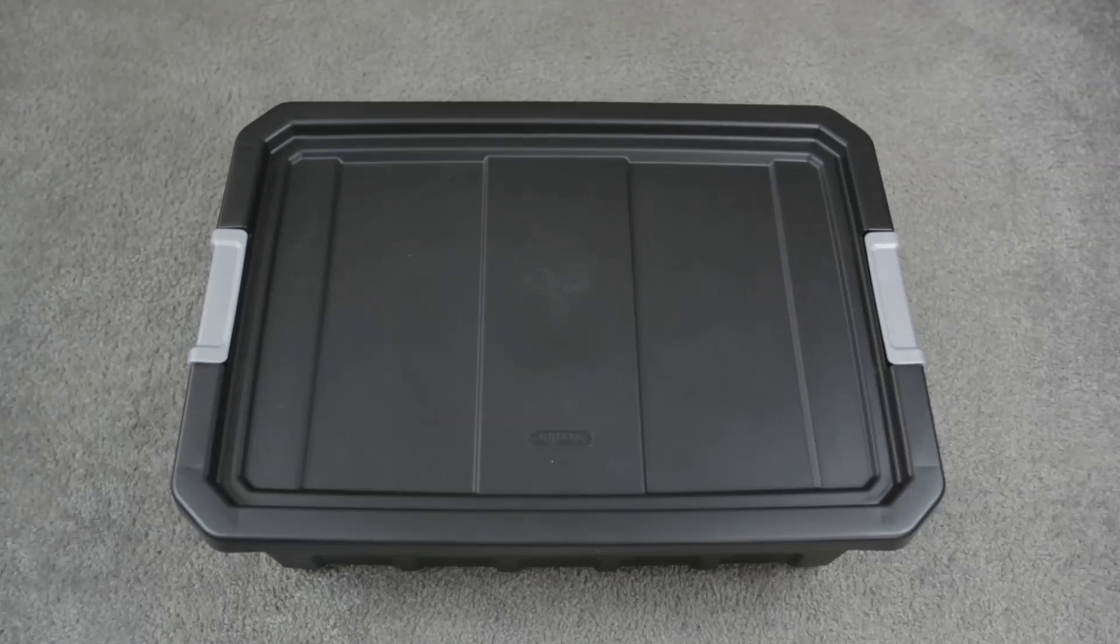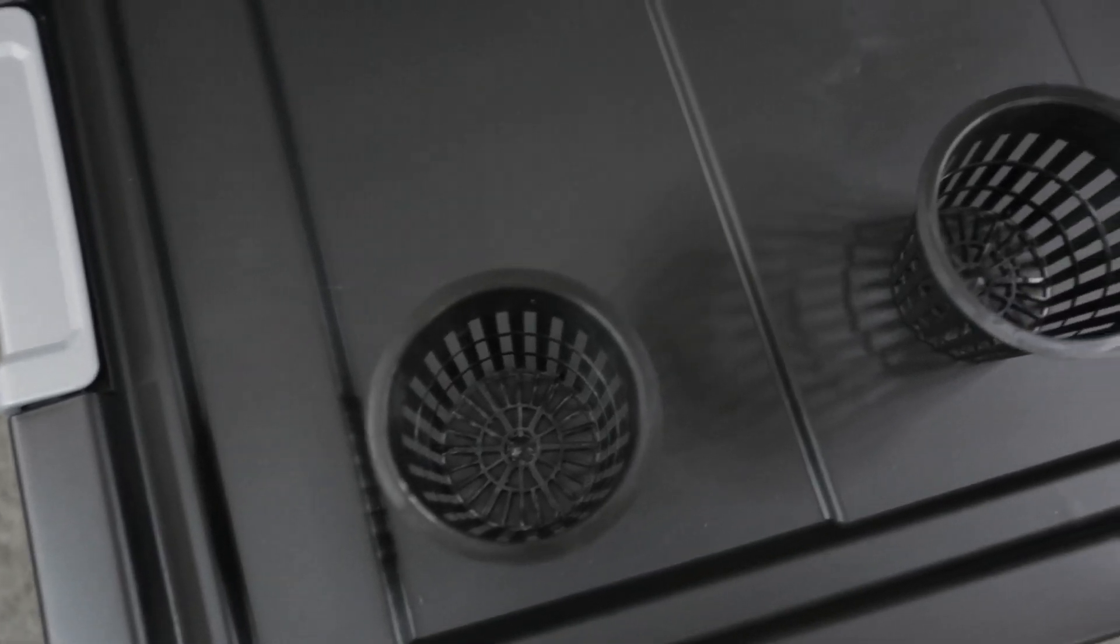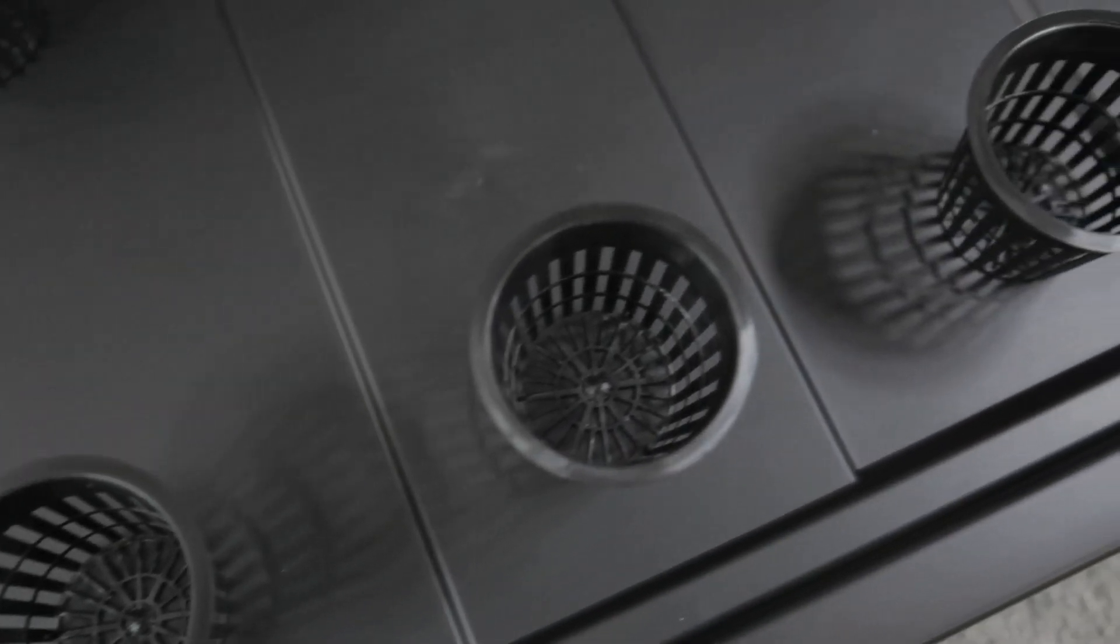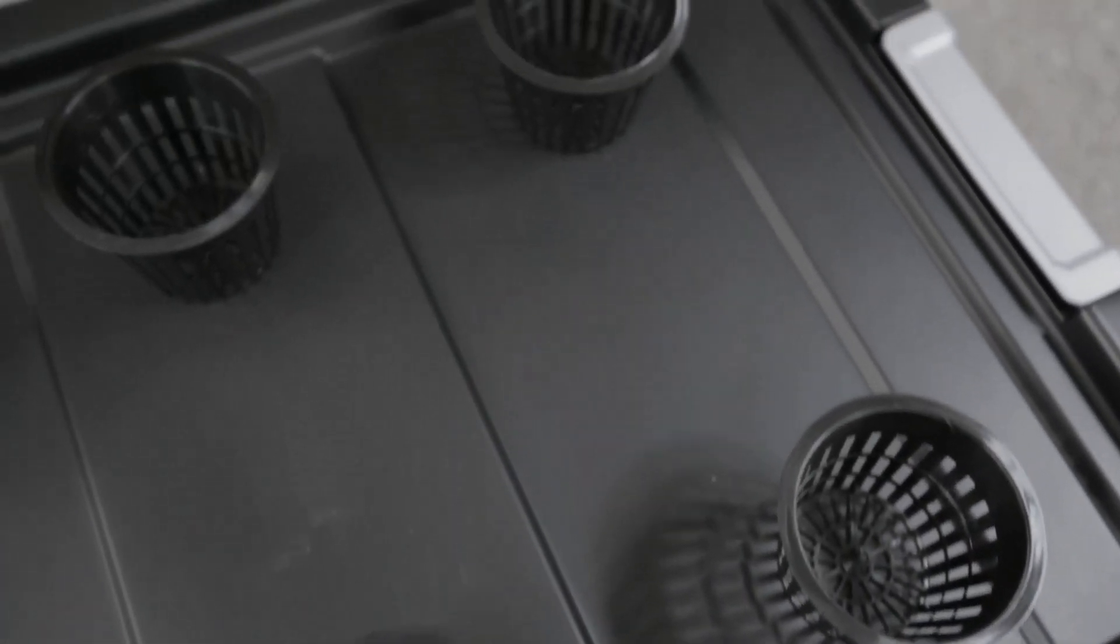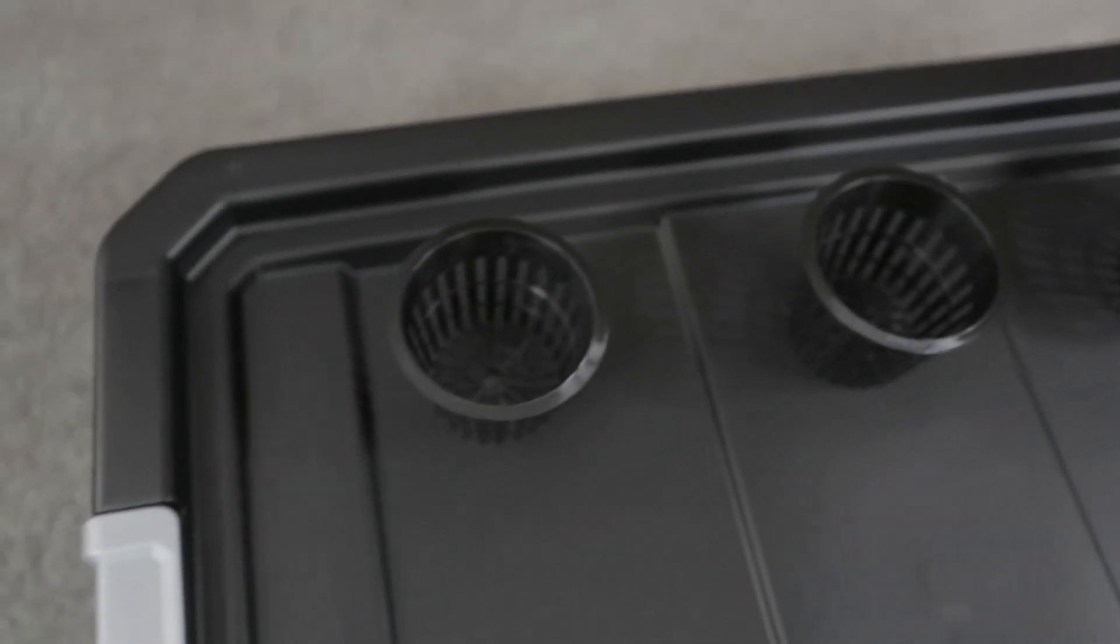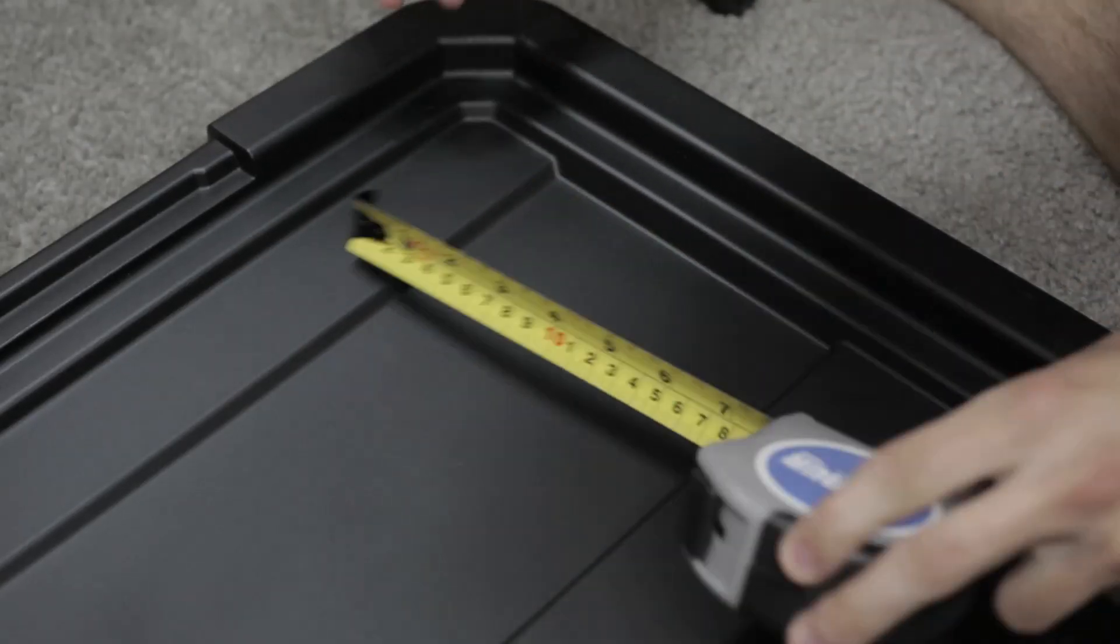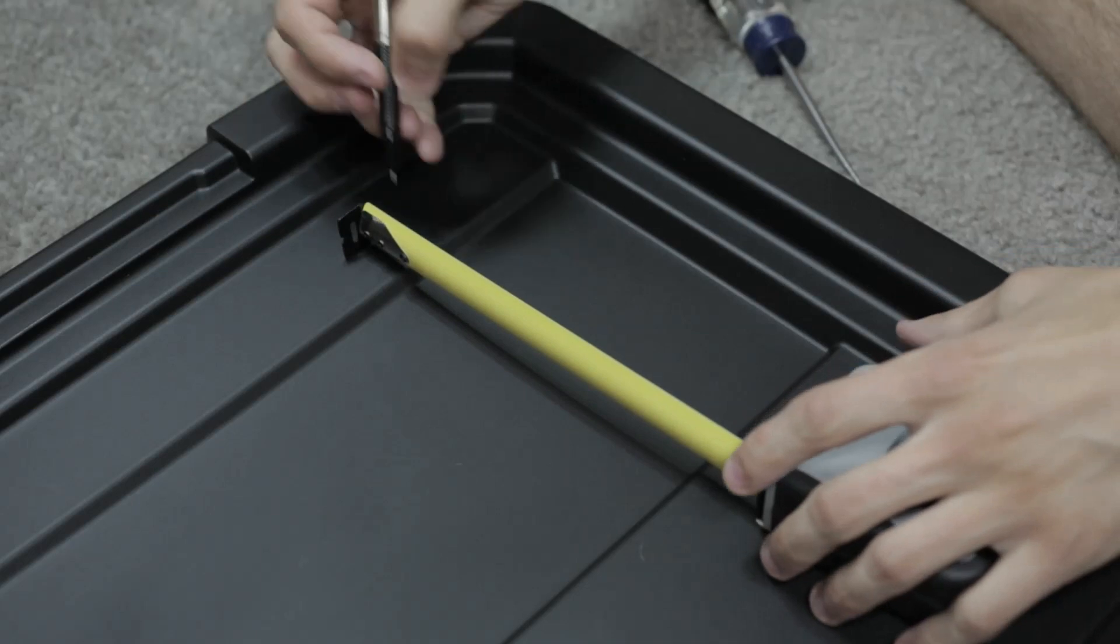Alright, so first I just take my net pots and I kind of eyeball it and just see how I want to fit everything on the actual container. You're going to want to leave room in between your net pots so your plants have room to grow. If you put them too close together, your plants are going to push against each other and they're going to just have issues with growing.